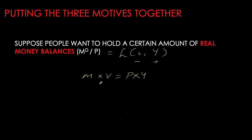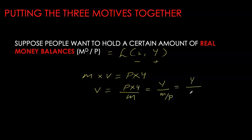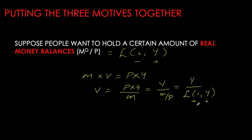Rewriting the equation of exchange, we can solve for velocity by moving P to the denominator — a simple mathematical manipulation. Substituting the Keynesian demand function for real money balances, we can see that velocity is now no longer constant. If the money demand function depends upon interest rates, so will velocity.